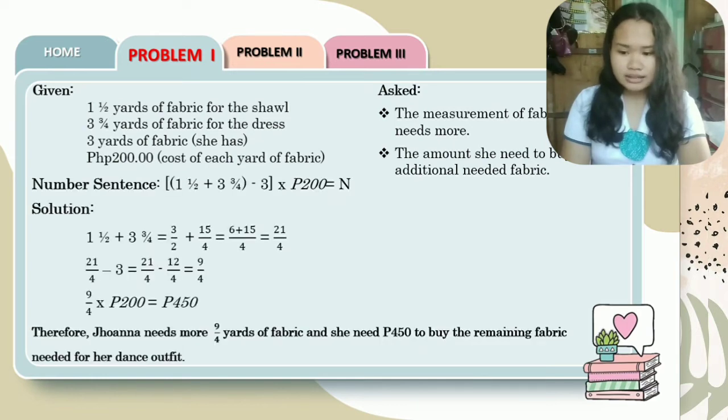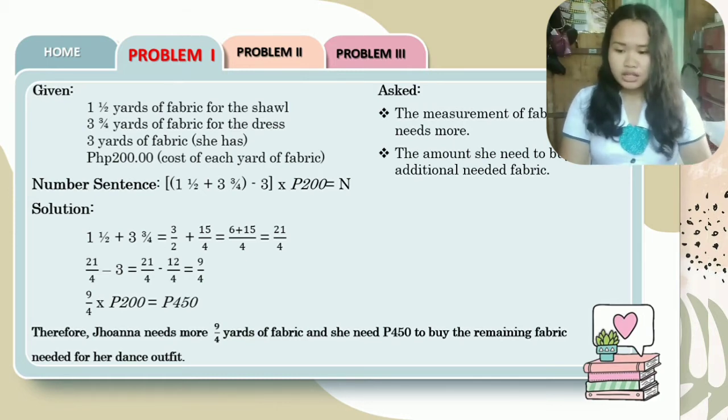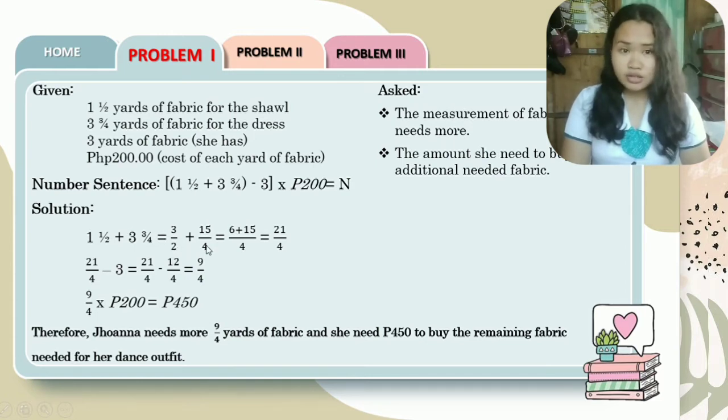We have here the number sentence: one and a half plus three and three-fourths minus three times 200 equals n. The solution: one and a half plus three and three-fourths. We need to transform this into improper fractions so that it will be easier for us to solve. So, one and a half equals three halves, and three and three-fourths equals 15 over 4. It yields 6 plus 15 equals 21, and copy the denominator, we have 4. This will be subtracted by three.